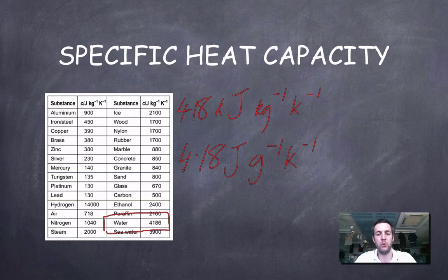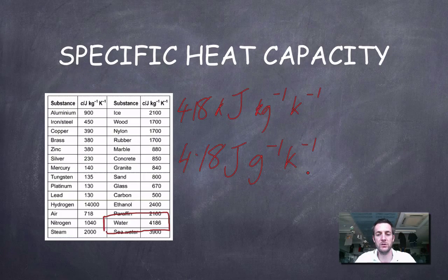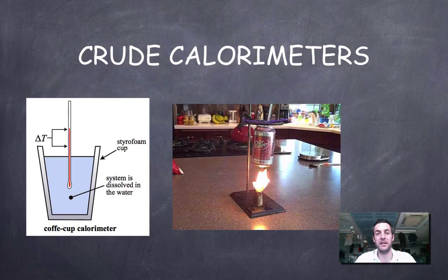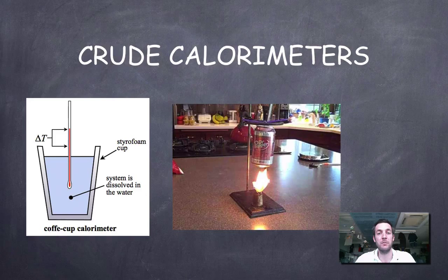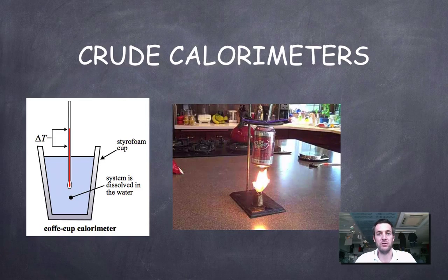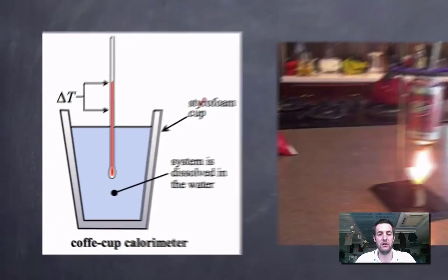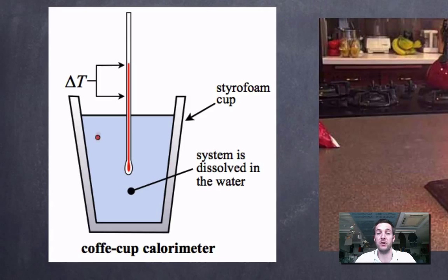We might also write that as 4.18 joules per gram of water per Kelvin temperature rise. We can see now that we've got a quantity which connects temperature changes and energy changes, because it has units of both joules and Kelvin. If I can devise an experiment to measure a temperature change, I can convert that into a heat change — and I'll also need to know the mass of the substance being heated, since mass appears in the specific heat capacity formula. Here are some pictures of crude calorimeters — devices used for measuring heat changes.